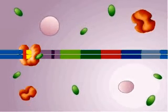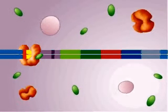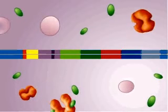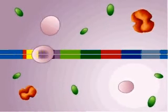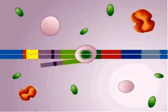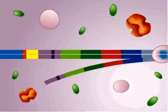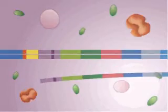Thus, tryptophan is said to be a co-repressor. Like the lac repressor, the trp repressor does not stick like glue, but periodically dissociates, allowing a low basal rate of transcription.